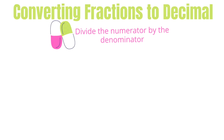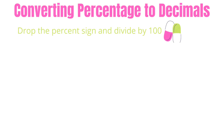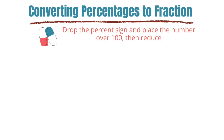First, we're going to cover converting fractions to decimals — to do that, you divide the numerator by the denominator. Then we'll talk about converting percent to decimals — you drop the percent sign and divide by 100.